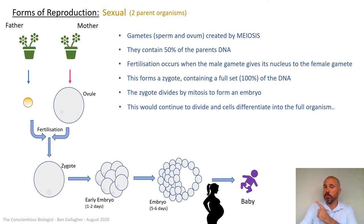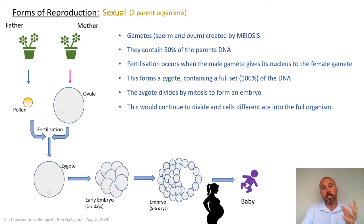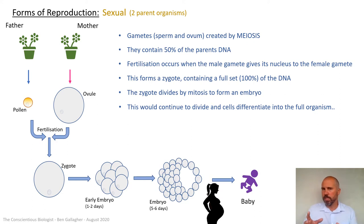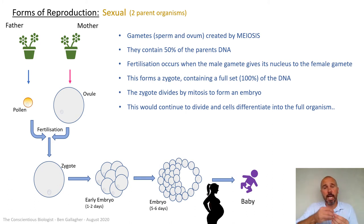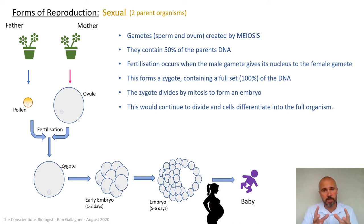Pollen grains, like any gametes, contain a nucleus that is haploid — containing half of the genetic information from that plant. Fertilization in plants isn't what we think of as sex: pollen can be carried by bees or blown around in the wind, but by some mechanism the pollen lands on the flower of another plant and fertilizes the egg. You still get fertilization, still form a zygote, still form an embryo that differentiates into a more complex embryo.